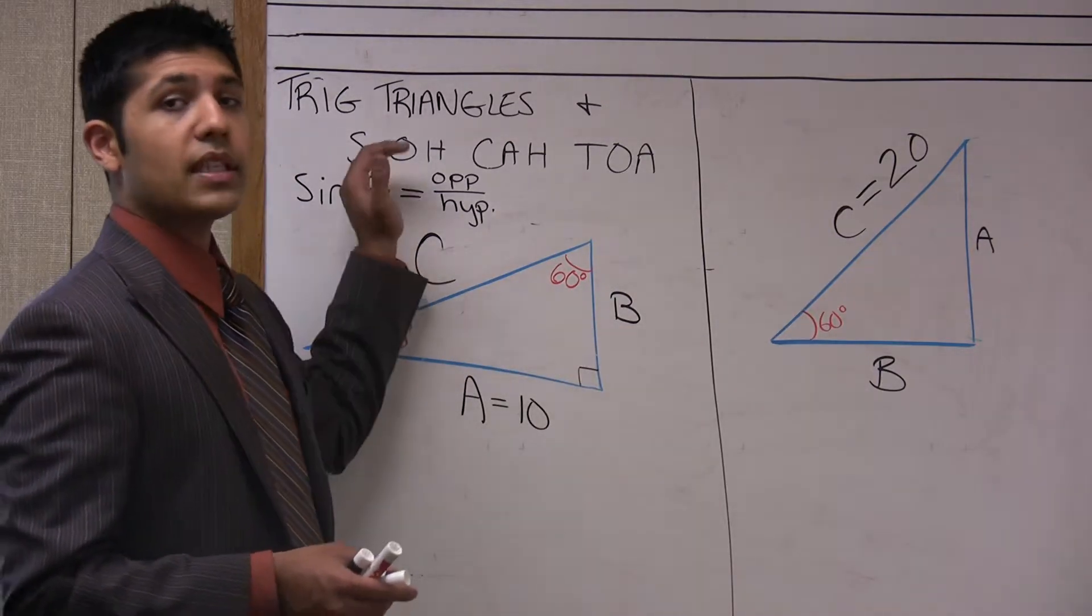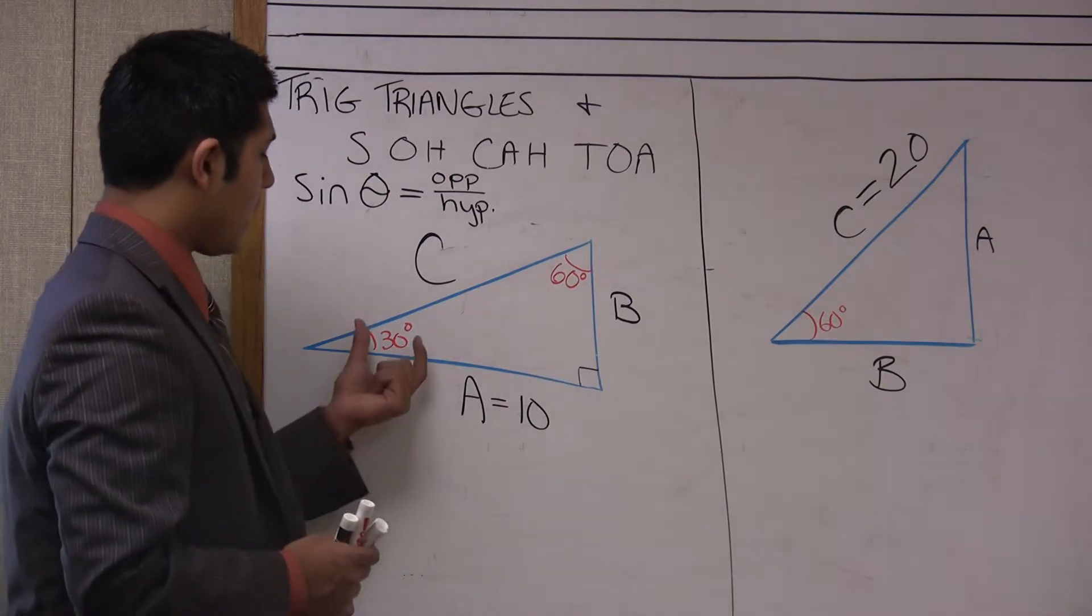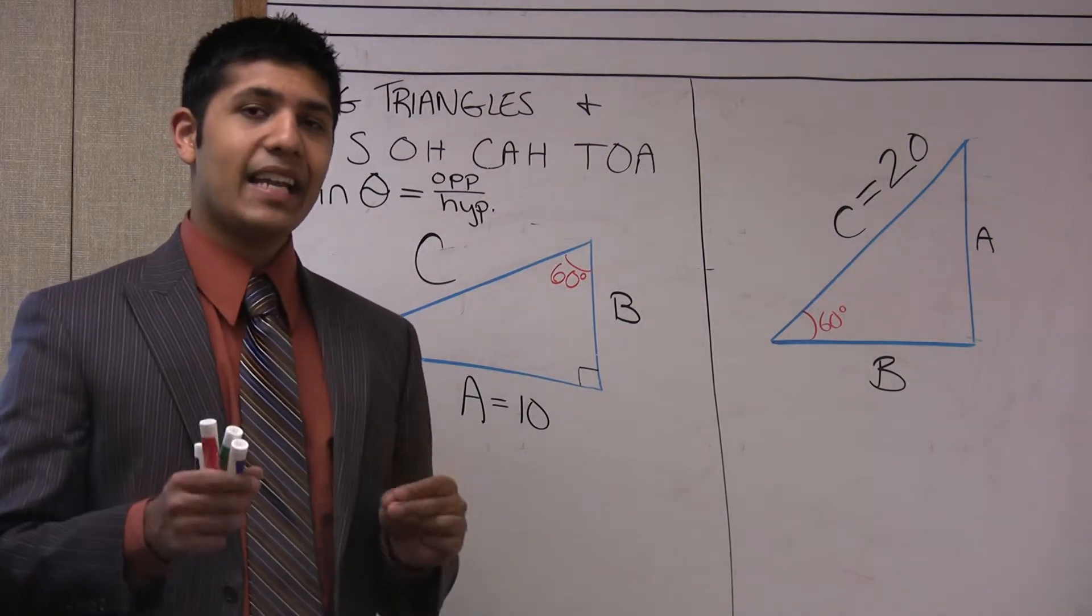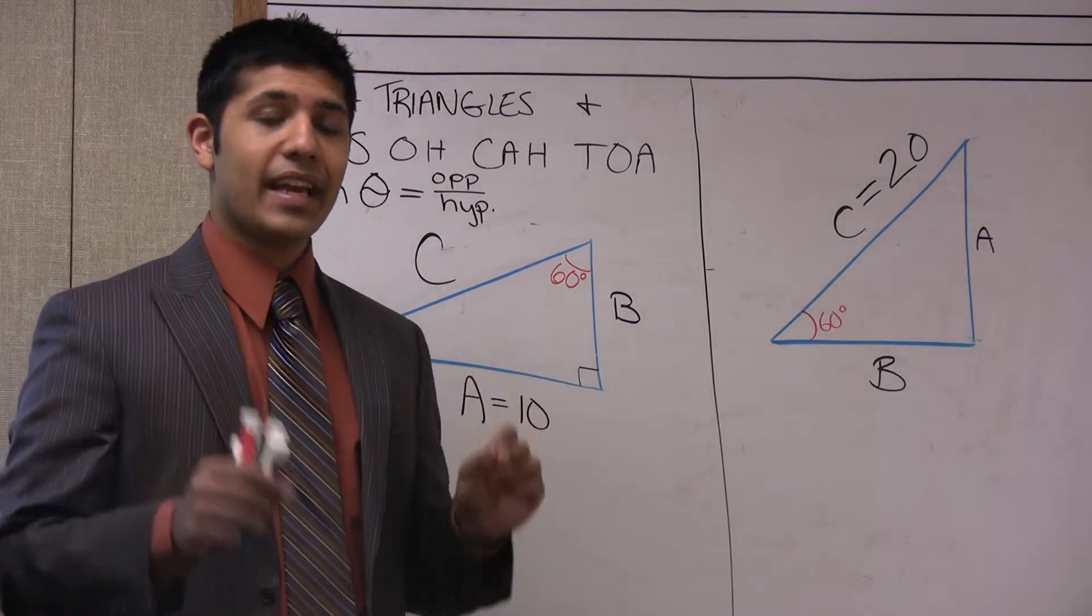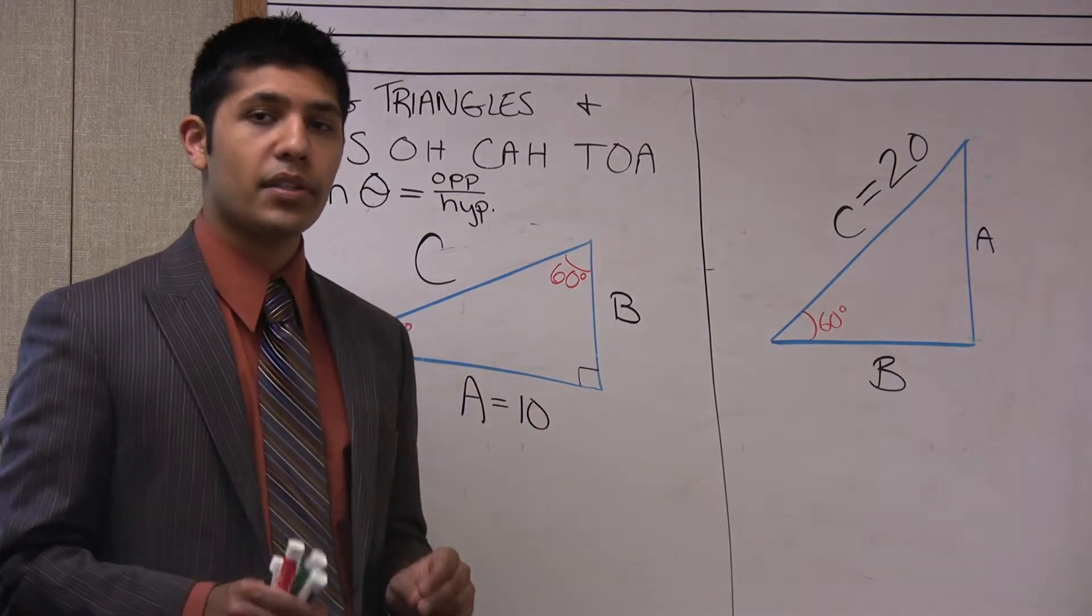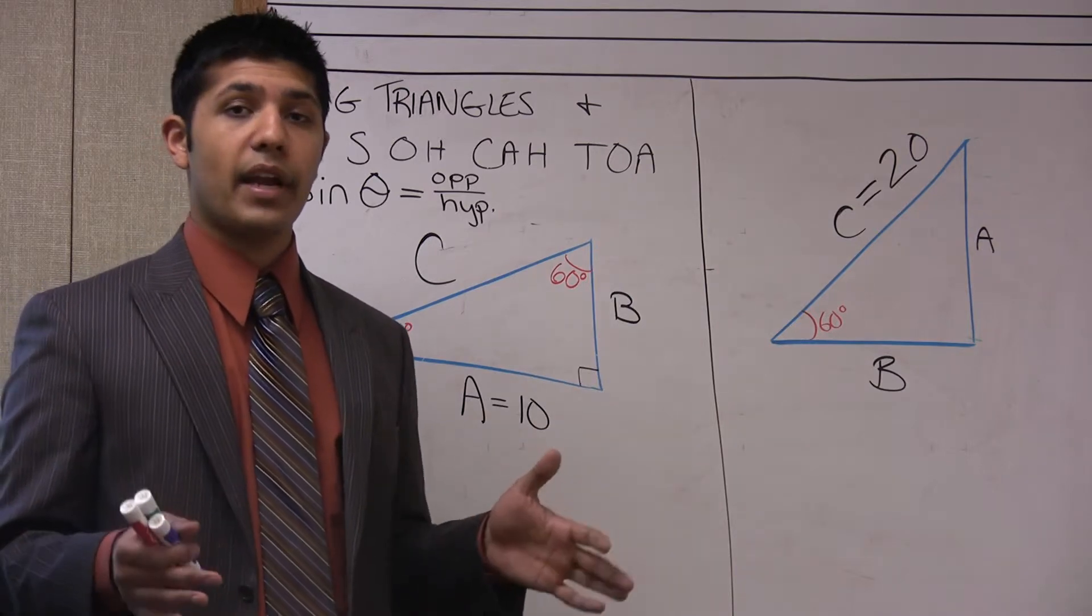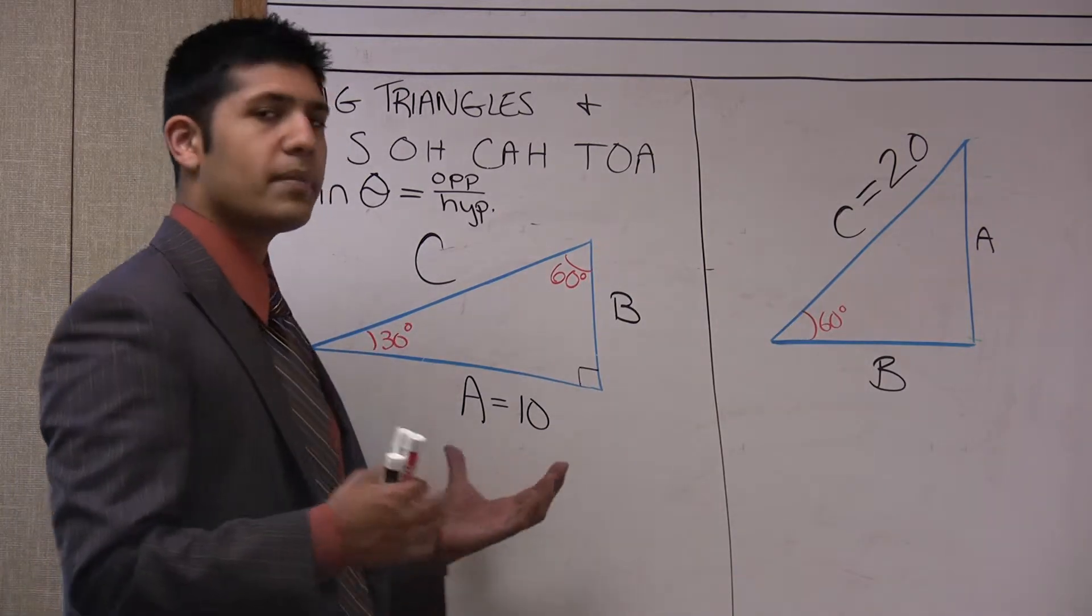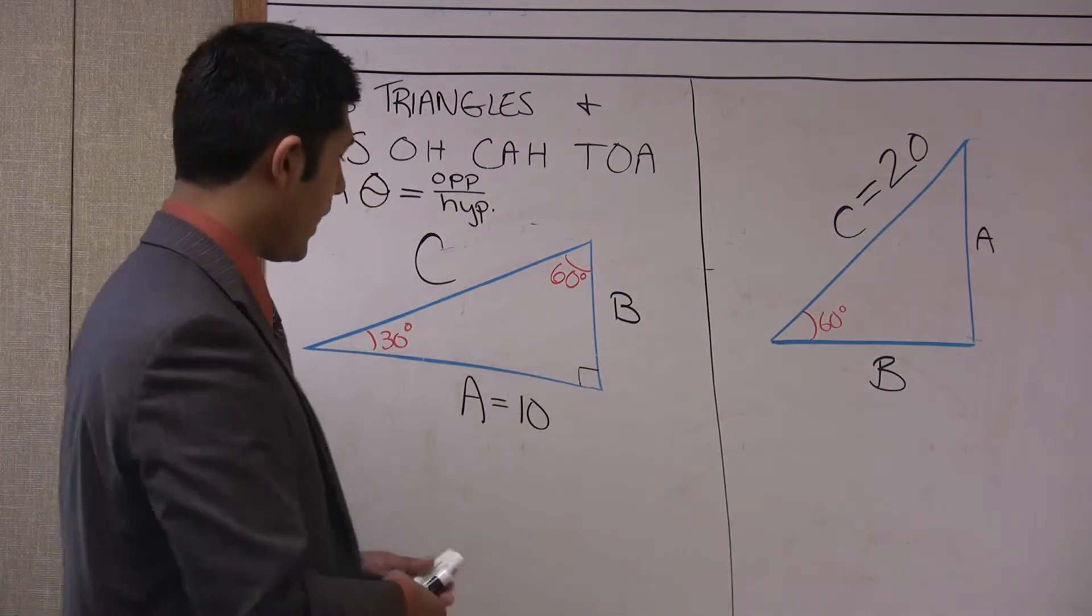Now we're about to solve for the value of B and the value of C using the mnemonic SOH CAH TOA. Let's choose to use the 30 degree angle. The great thing is it's our choice, and that is an important thing you need to specify as a tutor to your student—that it is their choice on the angle they want to use. As long as they follow the rules properly, it will always lead to the right answer.